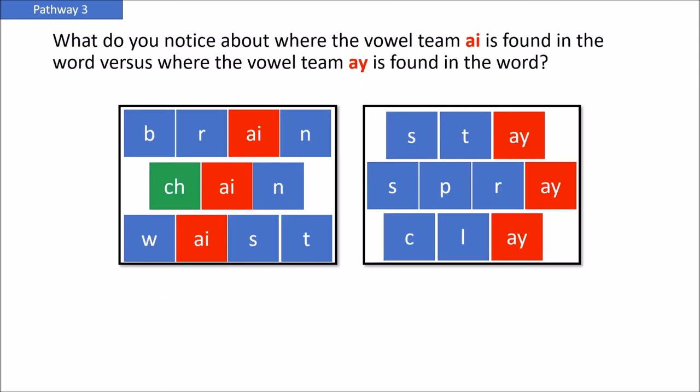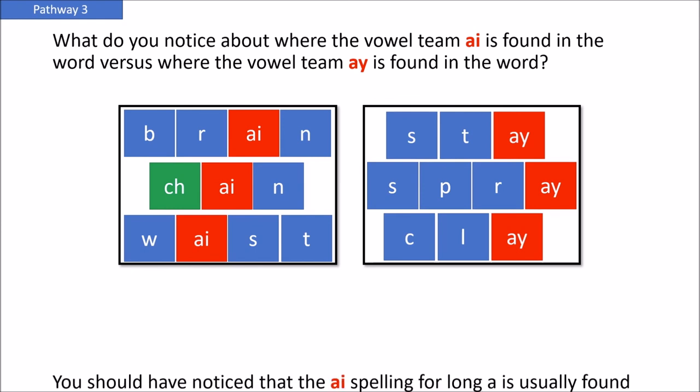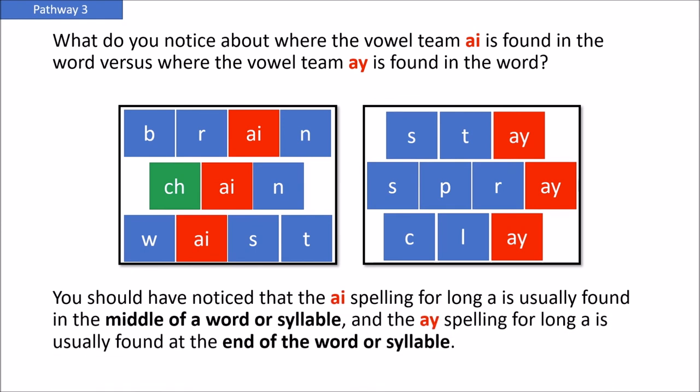What do you notice about where the vowel team AI is found in the word, versus where the vowel team AY is found in the word? You should have noticed that the AI spelling for the long A is usually found in the middle of a word or syllable, and the AY spelling for long A is usually found at the end of a word or syllable.